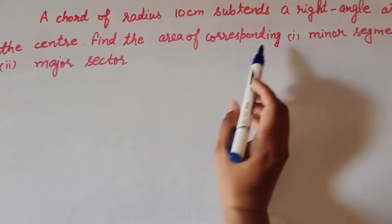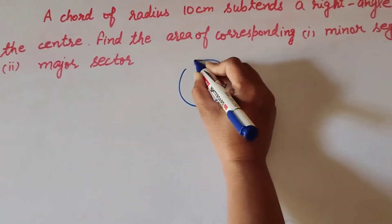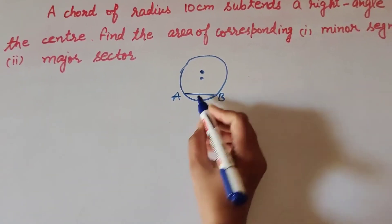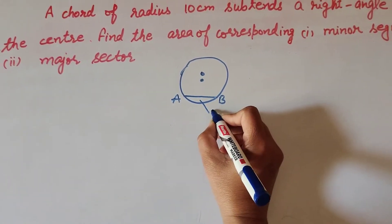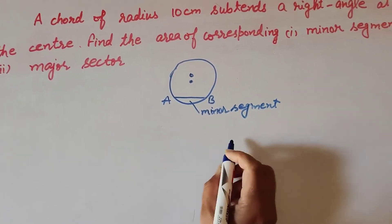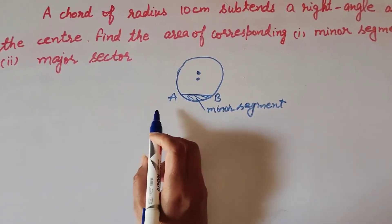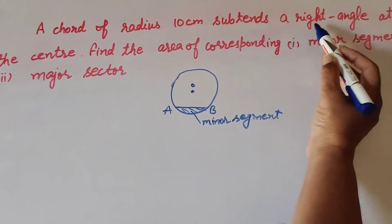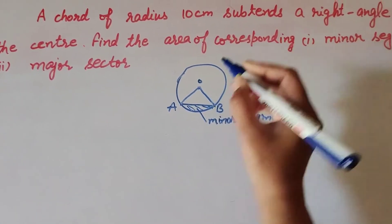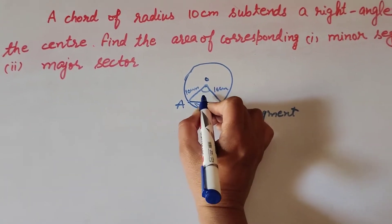In this question we find two things: first, the area of the minor segment, and second, the area of the major sector. If we draw the circle, its center is O and we draw a chord AB. The given chord has radius OA and OB of 10cm, and they meet at point O making an angle of 90 degrees.